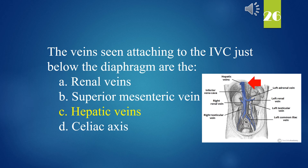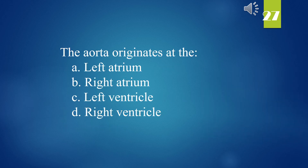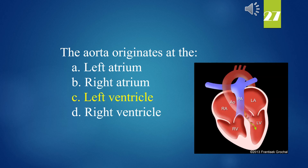The aorta originates at: A. Left atrium. B. Right atrium. C. Left ventricle. D. Right ventricle. The answer is C. Left ventricle.